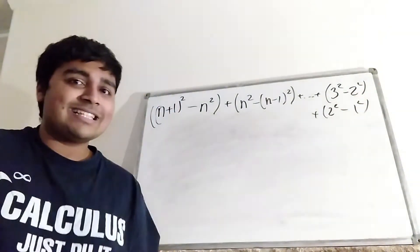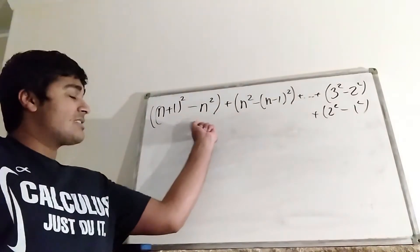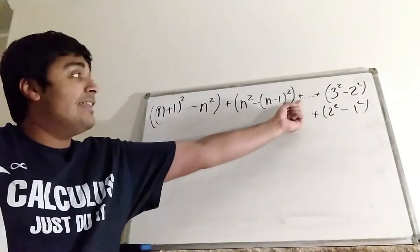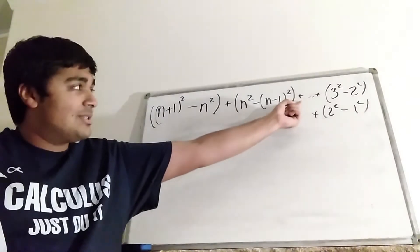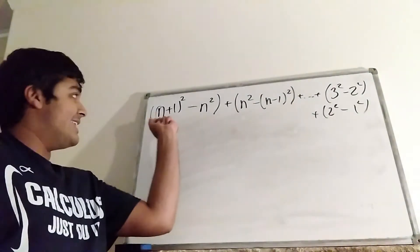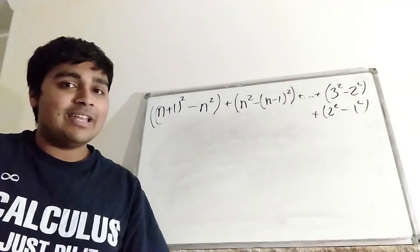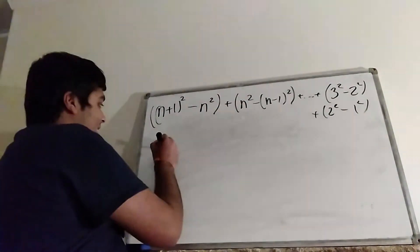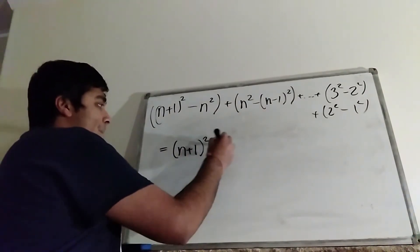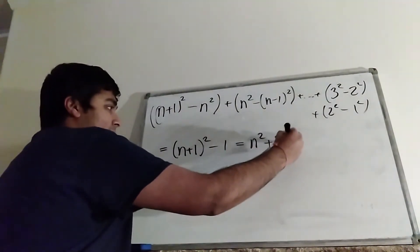This is what's known as a telescoping series, because the minus n² and the plus n² cancel, the minus (n−1)² and the plus (n−1)² in the next term cancel, and so on. All we're left with is the (n+1)² at the start and the minus 1² at the end. So this whole expression equals (n+1)² minus 1, which is of course n² plus 2n.